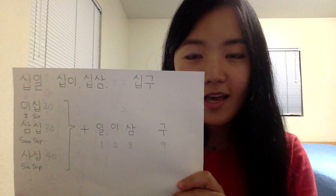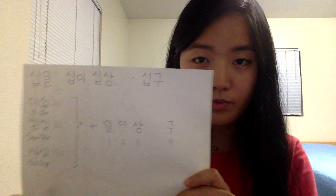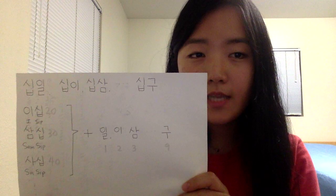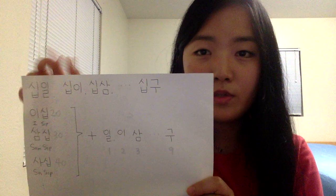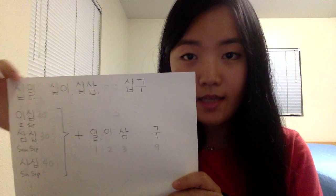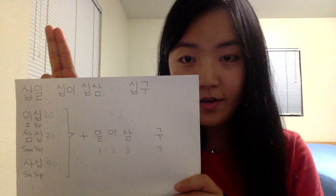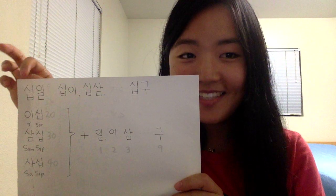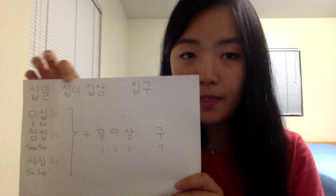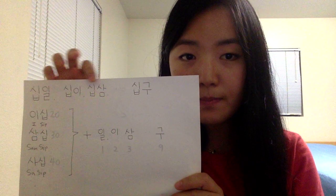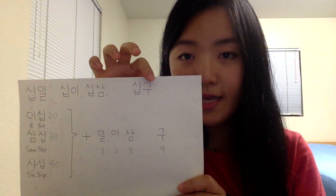Did you catch the rule? This is just the same rule we learned with the previous set of numbers. When you want to say 11, then you're gonna need 10 and 1, and just put those letters together. 10 and 1 put together means 11. So 12 is 10 and 2, 13 is 10 and 3, and 19 is 10 and 9.